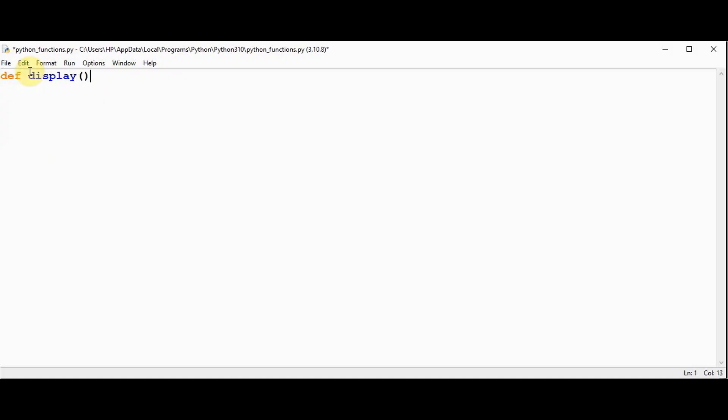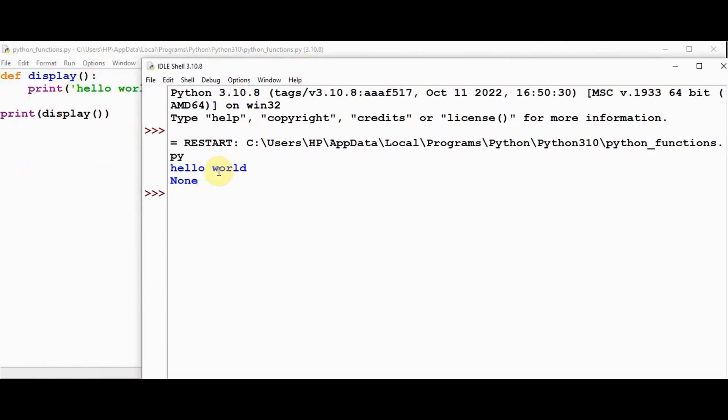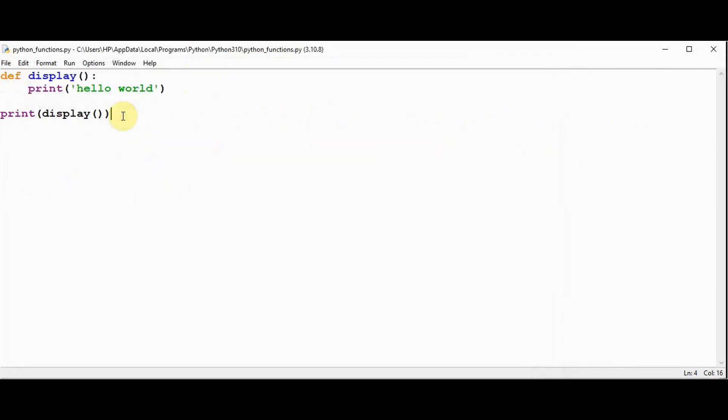A display function, print hello world. When we are calling the function, I use the print statement again. Here, hello world is the output of the print statement inside the function, and None is the output of the print statement outside the function.